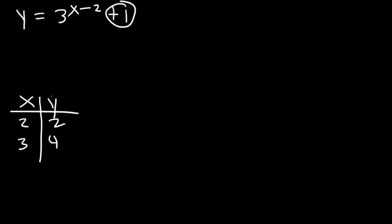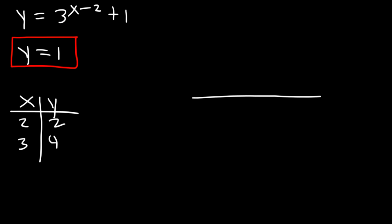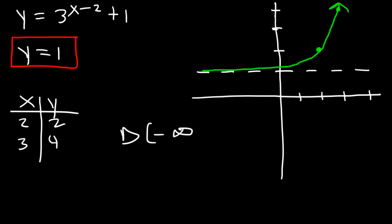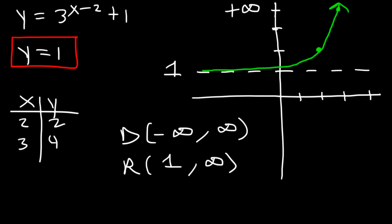The horizontal asymptote is based on the constant outside the exponential, so it's y equals one. Let's graph it — we have a horizontal asymptote at y equals one, and the points (2, 2) and (3, 4). The graph starts from the horizontal asymptote and increases towards those points. The domain is all real numbers, and the range starts from the asymptote at one and goes to infinity, so the range is from one to infinity.